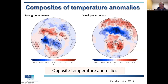Looking at temperature anomalies for a strong vortex versus a weak vortex: with a strong vortex you have a cold Arctic and warm mid-latitudes including the Eastern United States and Northern Eurasia. But when the vortex is weak, you tend to have a warm Arctic and cold mid-latitudes, focused across Northern Eurasia.